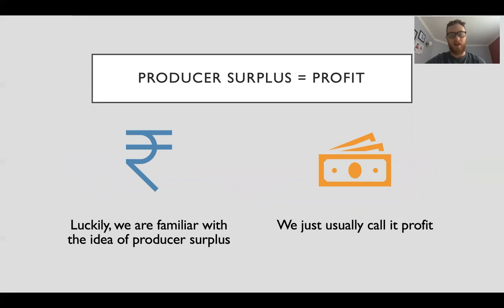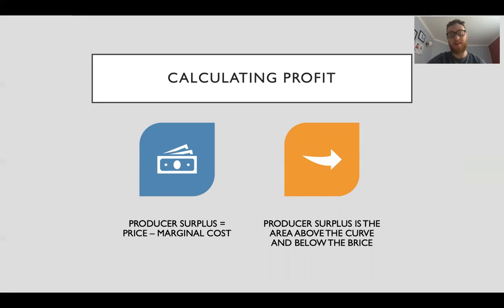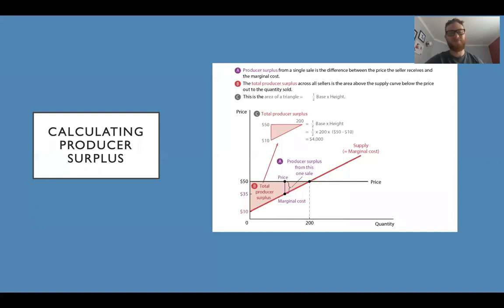Producer surplus - luckily we're familiar with the idea of producer surplus. We usually just call it profit. Calculating profit: producer surplus or profit is equal to the price minus the marginal cost. I'll be showing an example in one second. Producer surplus is the area above the curve and below the price.